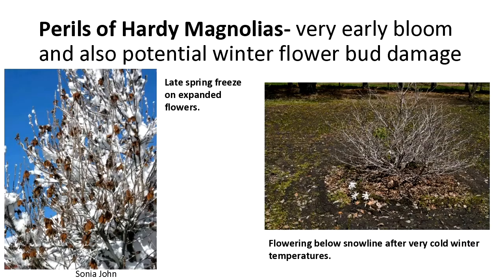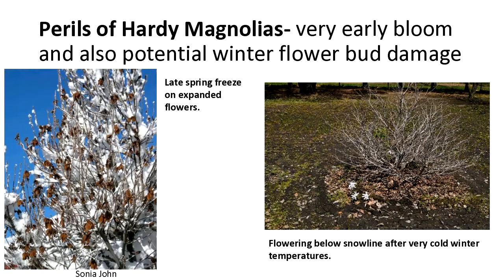This is what happens when they bloom early — on the left, those aren't leaves, those were flowers that came out and then a very cold snap with snow hit them. On the right, after a severe winter with very dry conditions and severe cold, you can have flowering just below the snow line in some years. The plants still do fine, but you may not get the flowering you're anticipating every year. You have to be patient, take it when it's good, and expect it won't happen every year. They're a neat plant to work into a border planting.